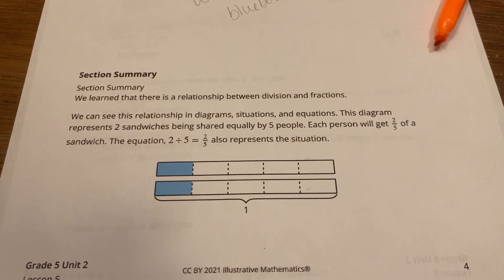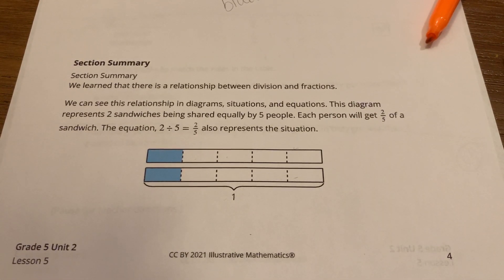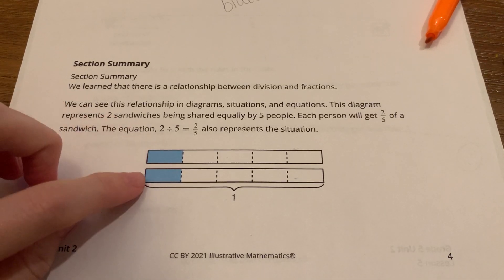One, two, three, four, five. They split each sandwich into five equal pieces. Each person is going to get two-fifths of a sandwich total.